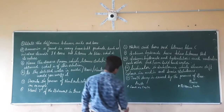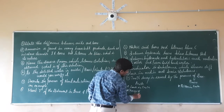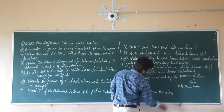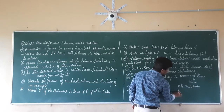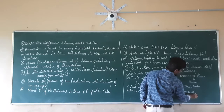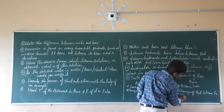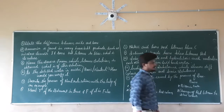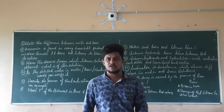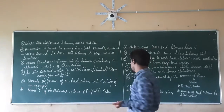So the second difference: acids change the color of blue litmus to red, while bases change the color of red litmus to blue. If the litmus paper is red colored, bases will change it to blue. If it is acid, acid will change the blue litmus paper to red.